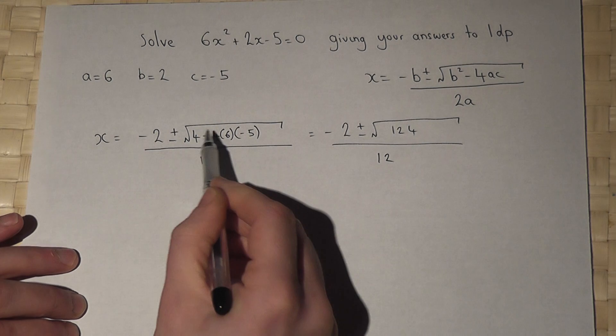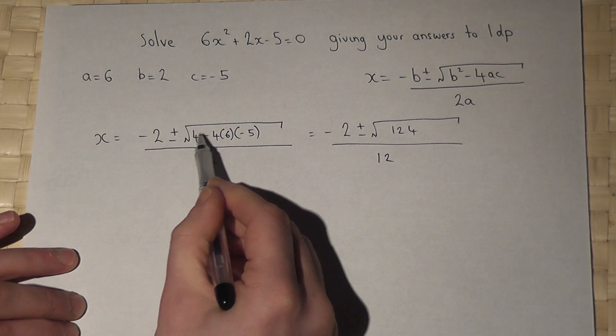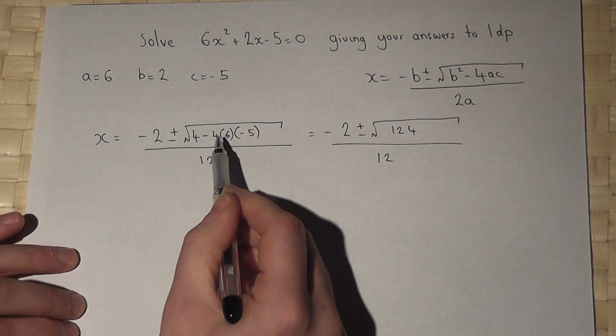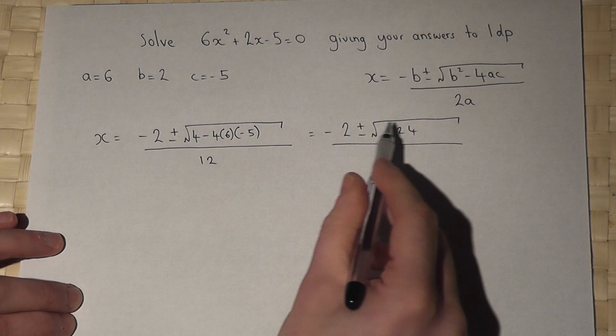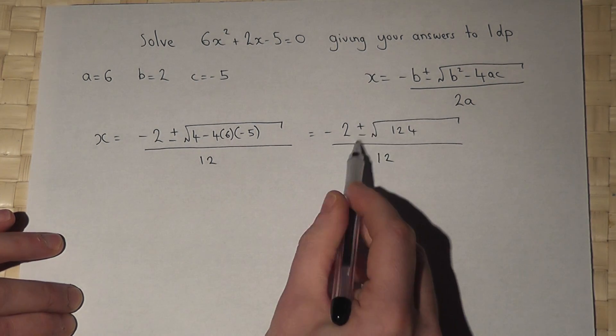So again, there are two negatives, so it becomes 4 plus 120, because the two negatives cancel out. So to find x, we have to work out this here with a plus and a minus.